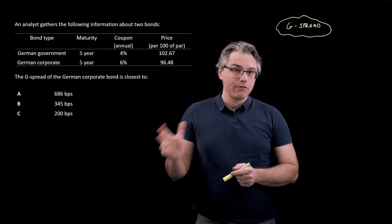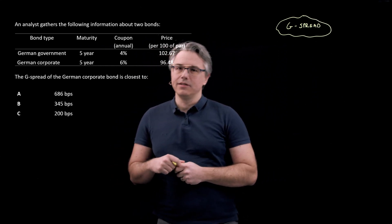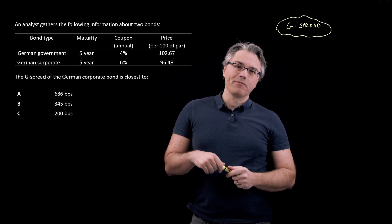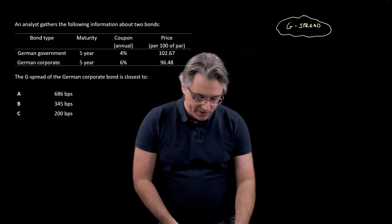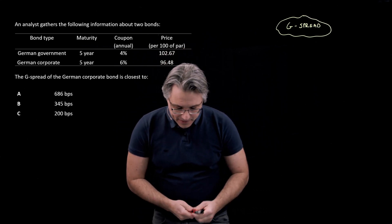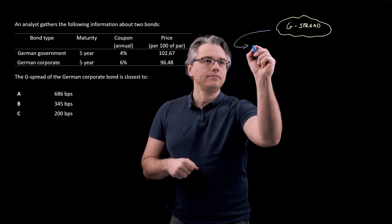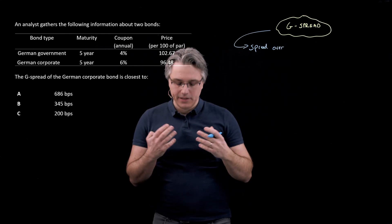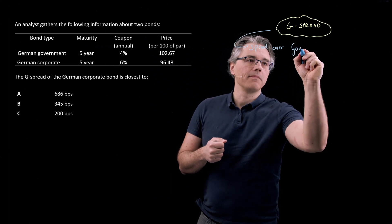Right, this is a relatively easy thing to do if you know how to compute the yield to maturity on a fixed income instrument using your preferably Texas Instruments BA2 plus calculator. Let me just explain that the G-spread is basically the spread over the government bond yield. Hence the G in the name.